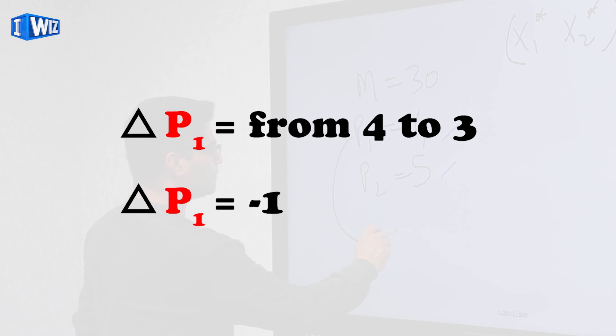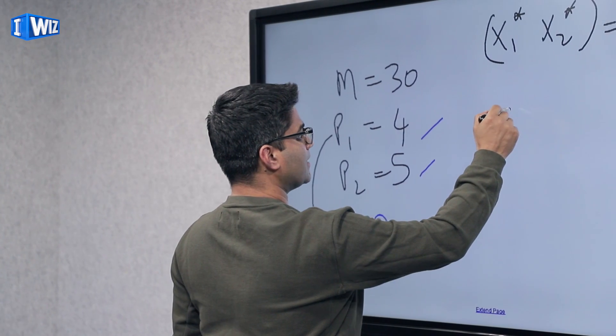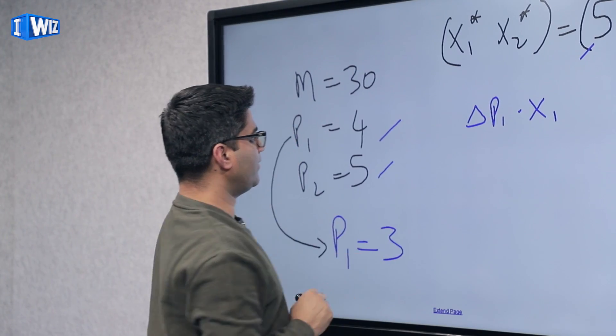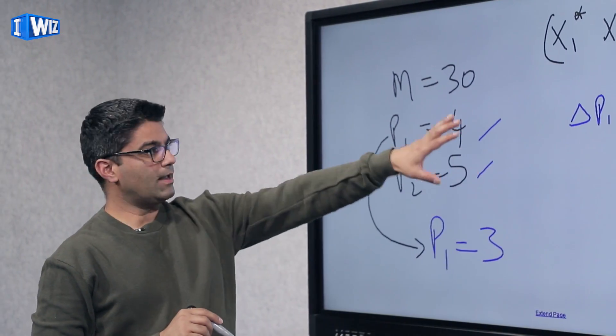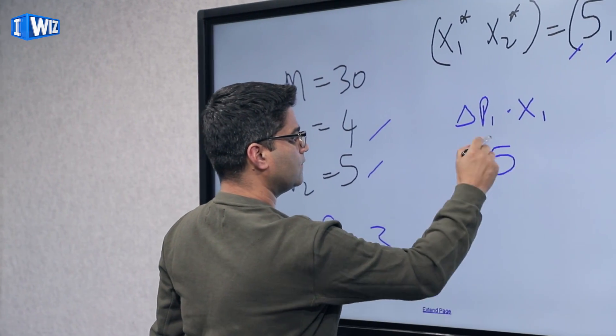So now let's say if the price of good one changes from four to three, and then keep in mind this concept that I said, change in P1 times X1. So let's look at that. So price goes down by one, and X1 is five. So that one times five is five.